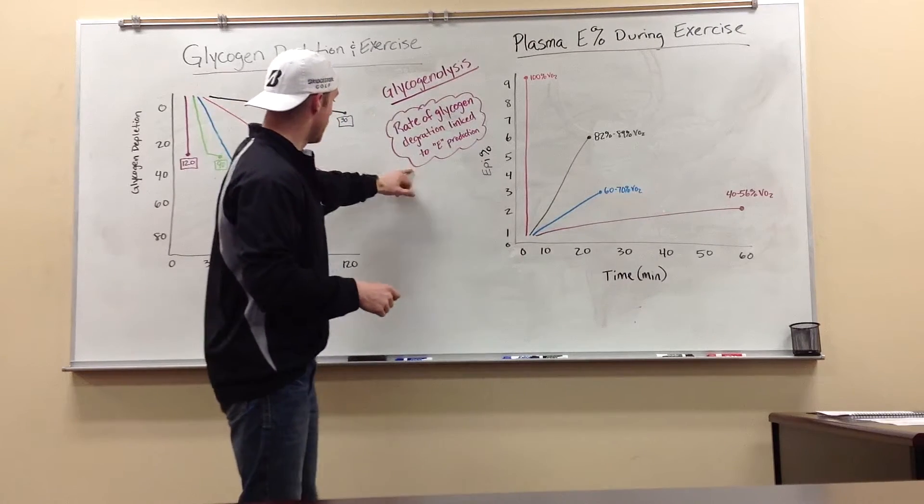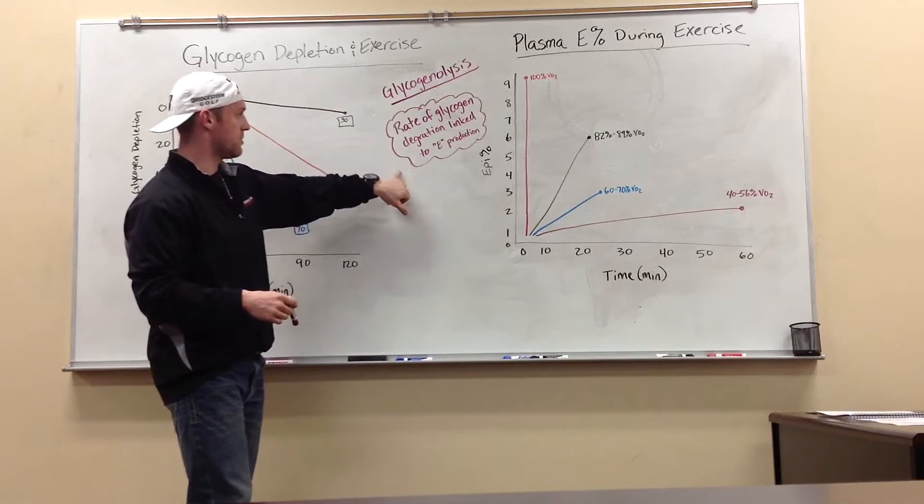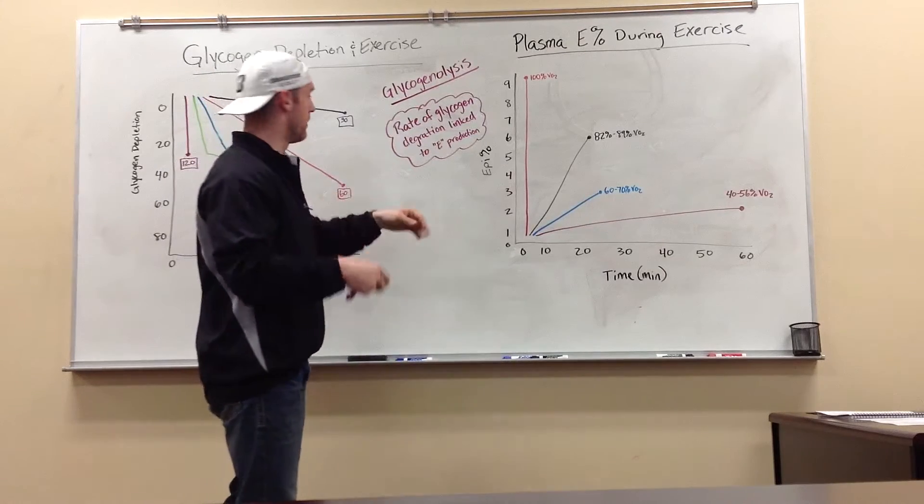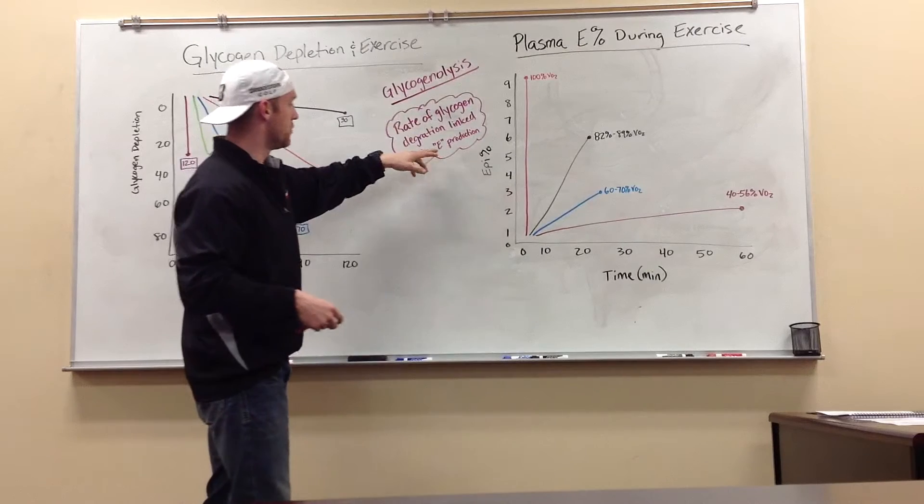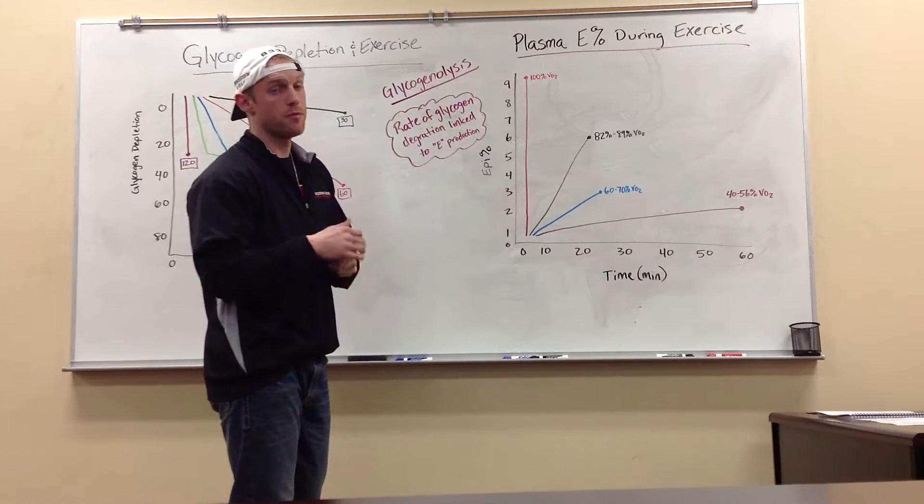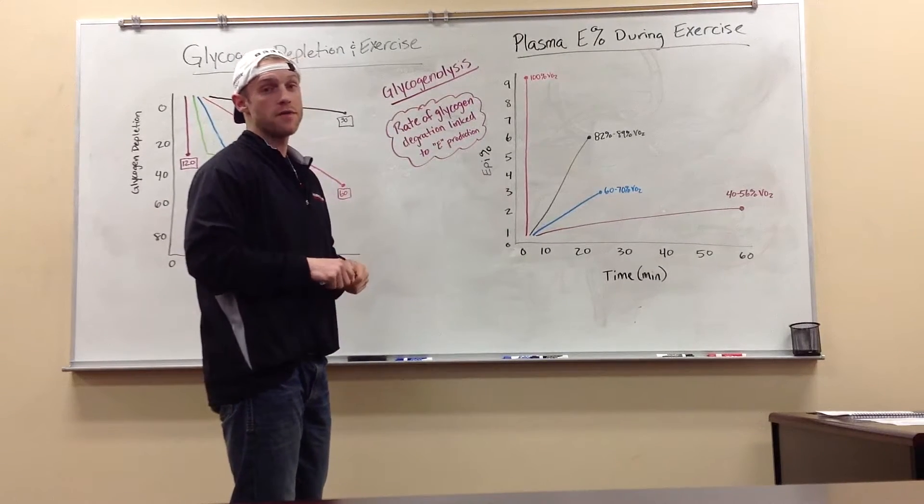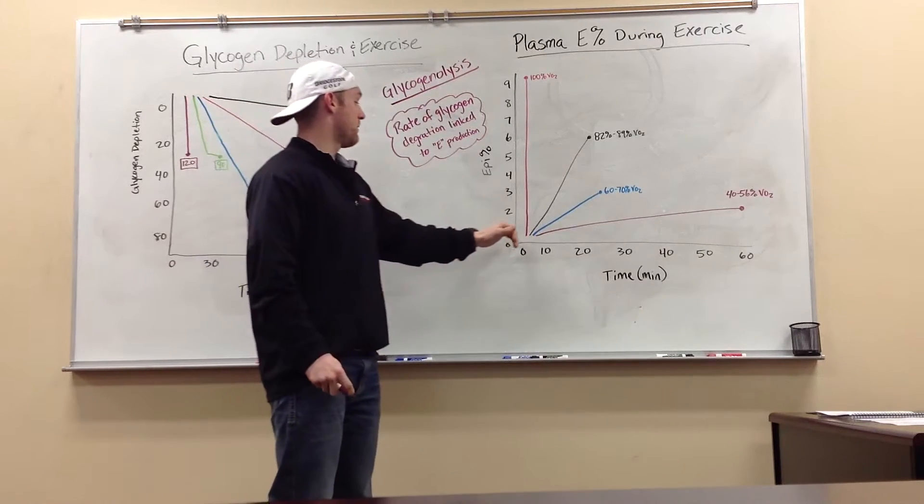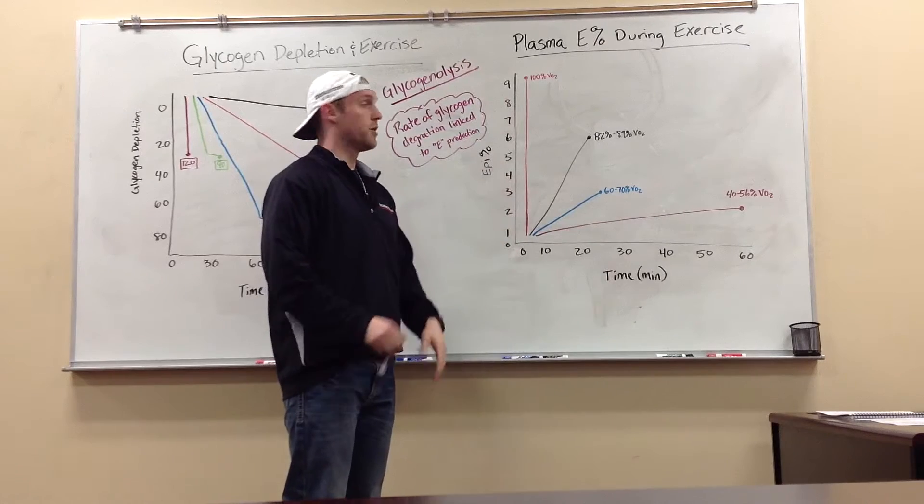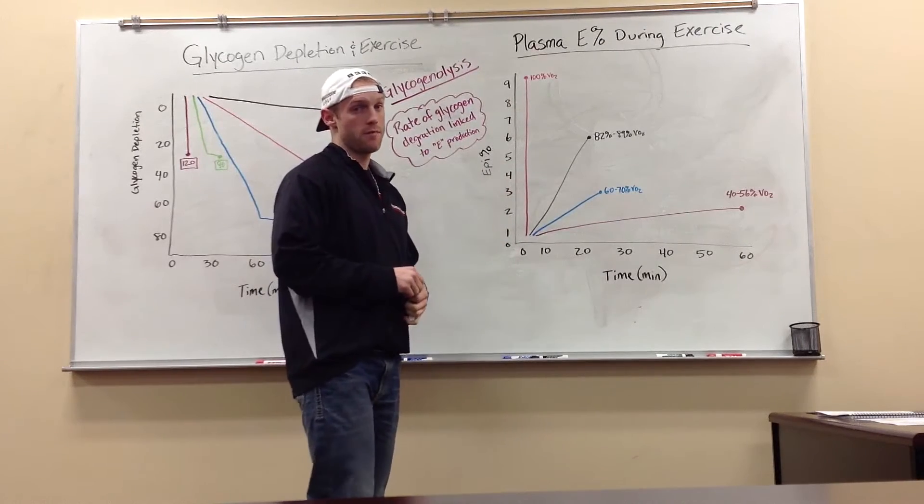I got this circled right here because this kind of sums it up, both graphs, ties them in together. The rate of glycogen depletion is linked to epinephrine production. So pretty much the quicker that you have to tap into your glycogen stores, the faster and more you're going to produce epinephrine.